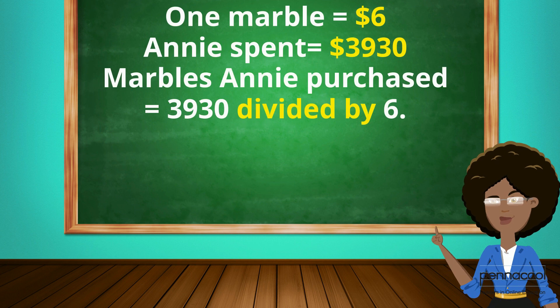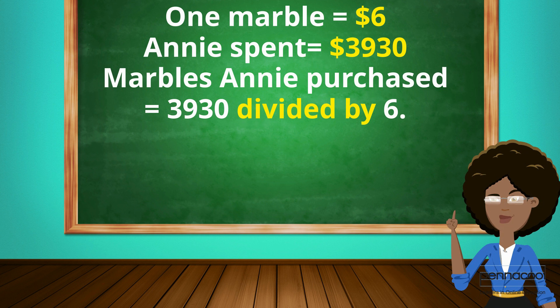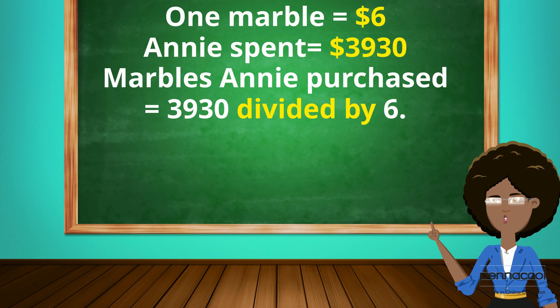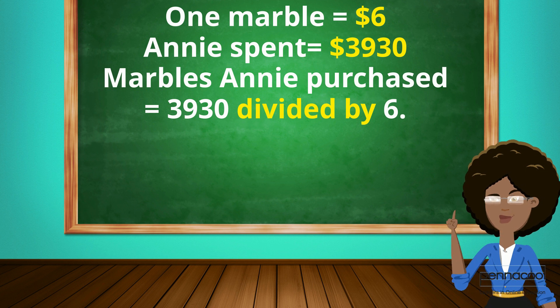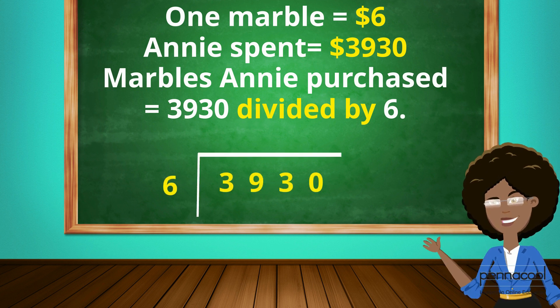1 marble equals $6. Annie spent $3930. Marbles Annie purchased equal $3930 divided by 6. Now, all you have to do is your long or short division to figure out your answer.